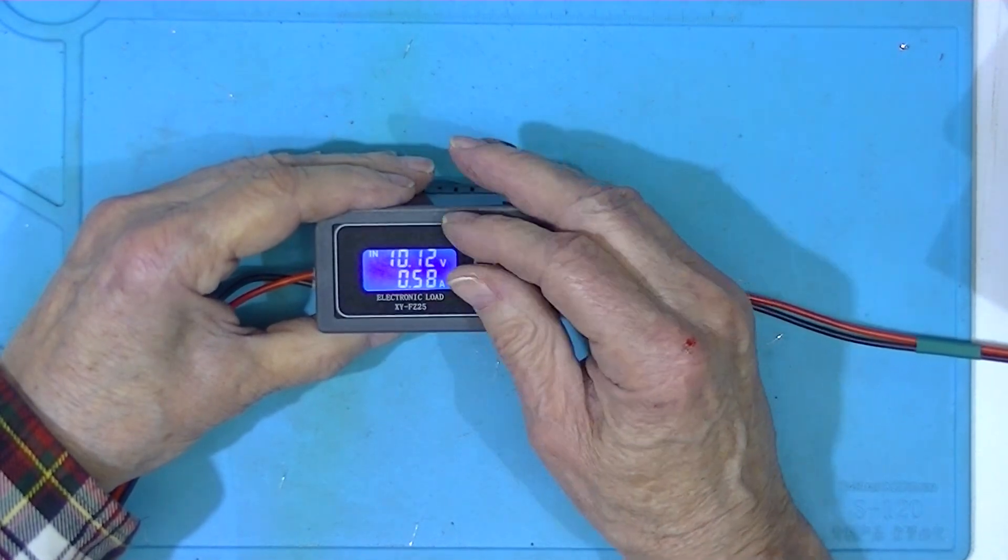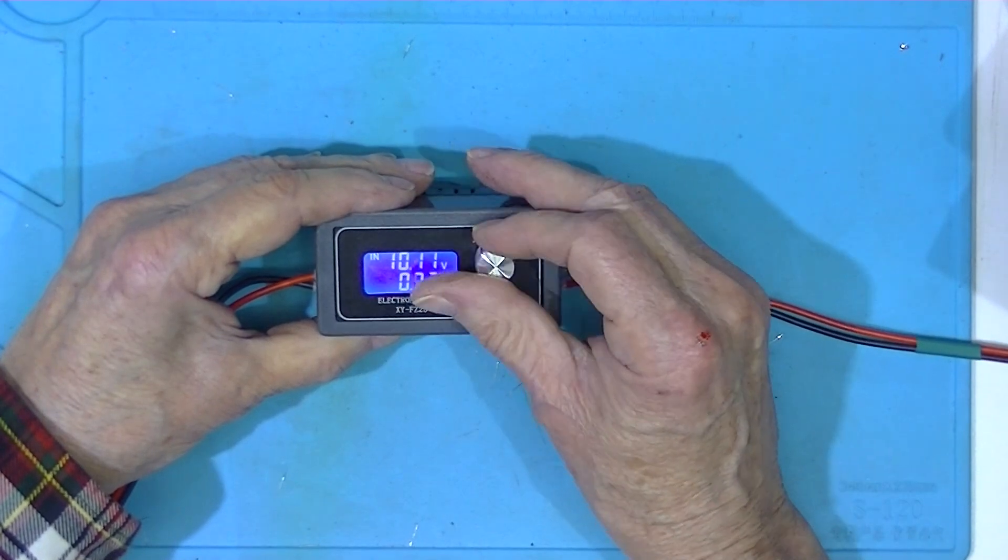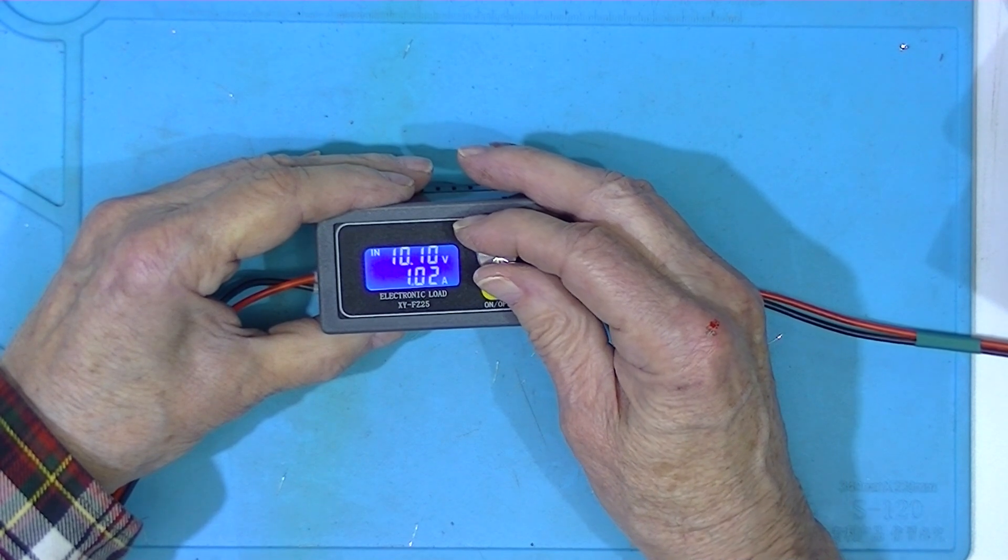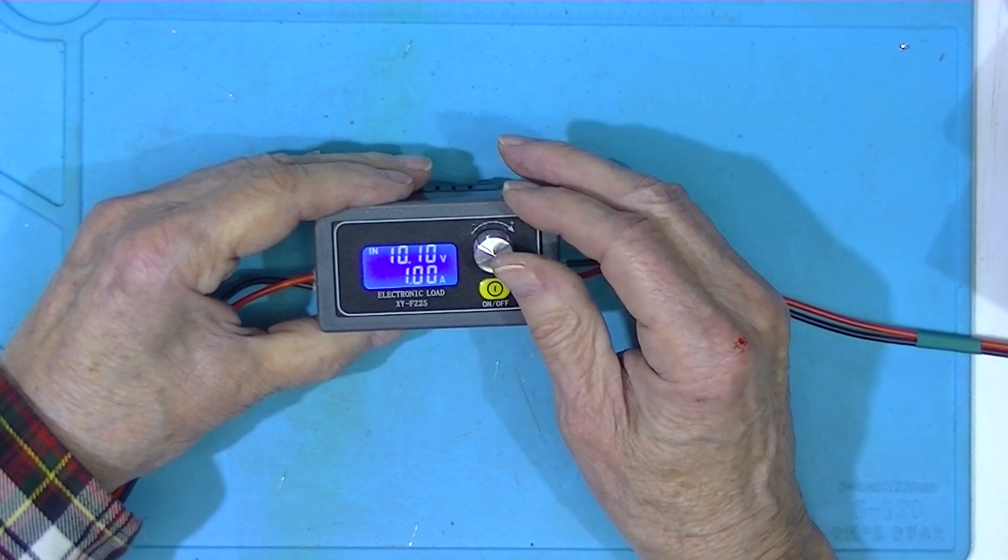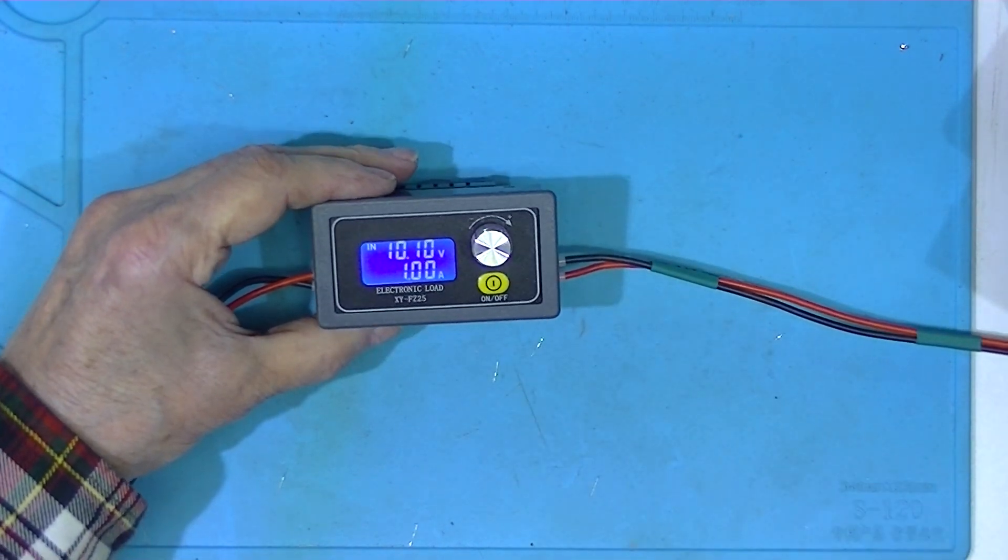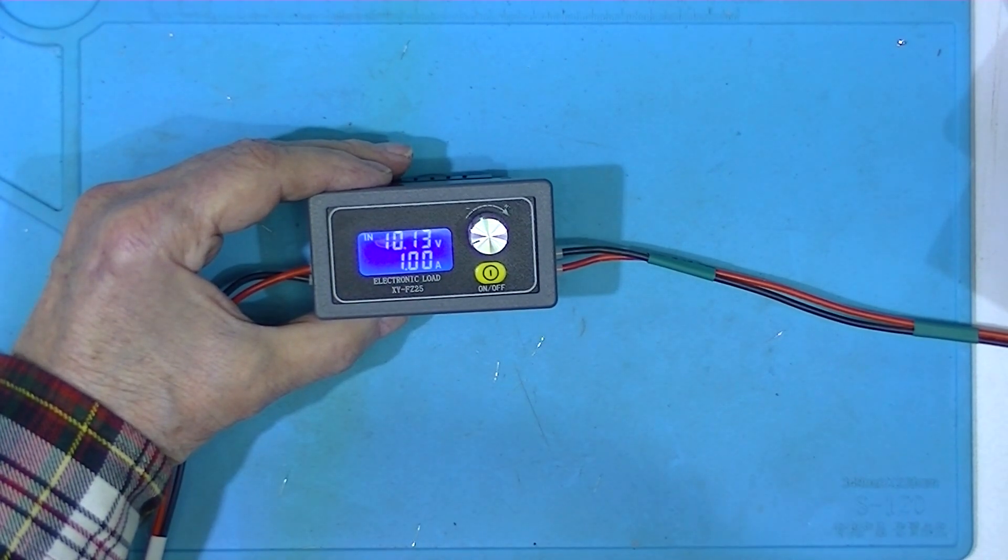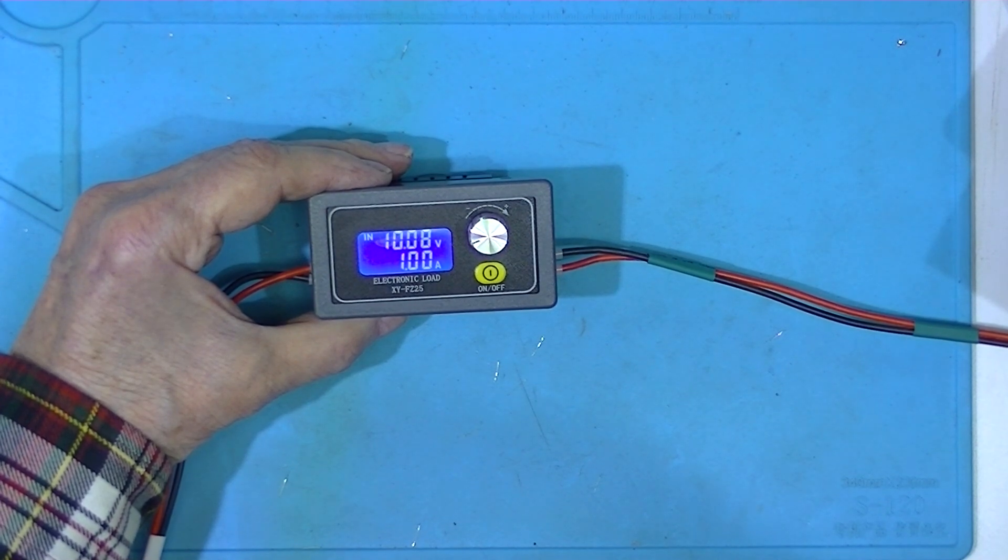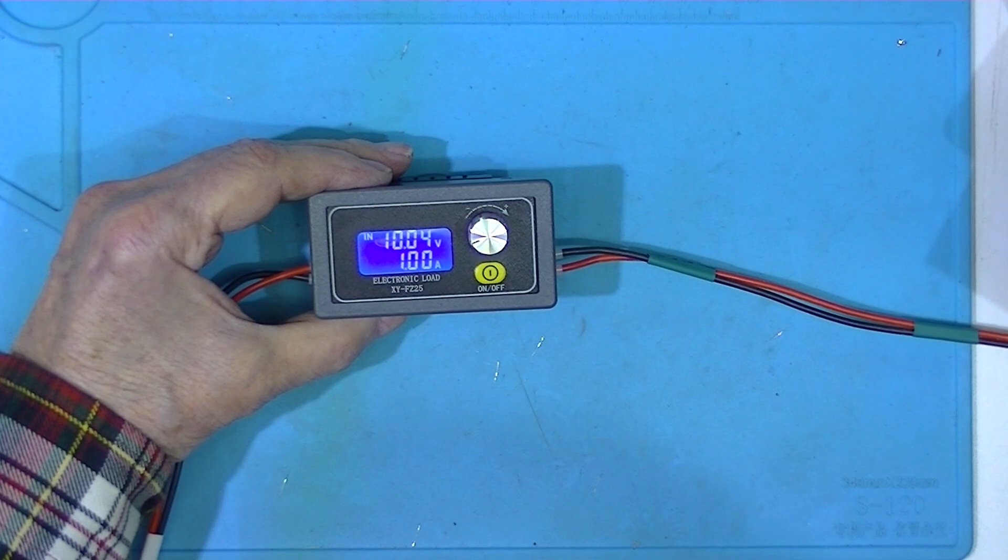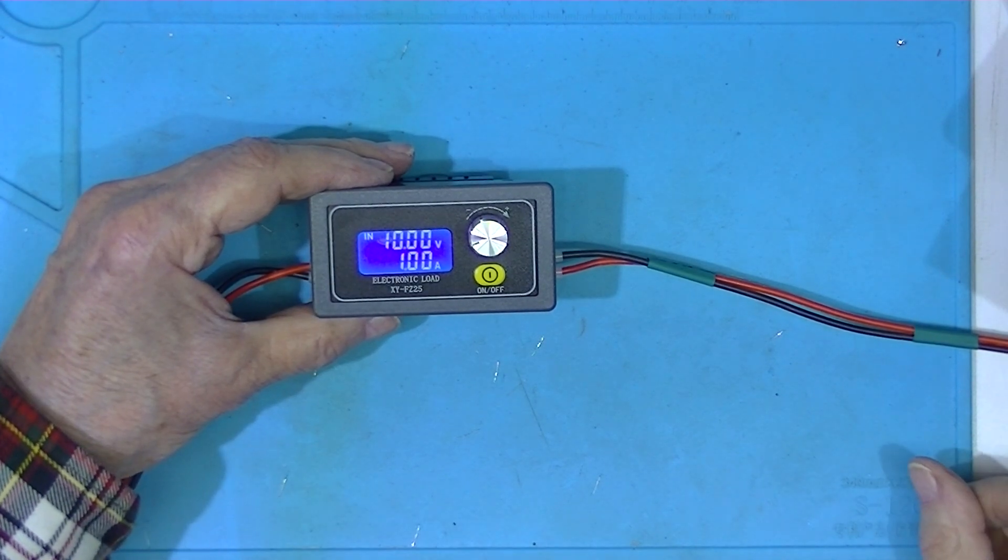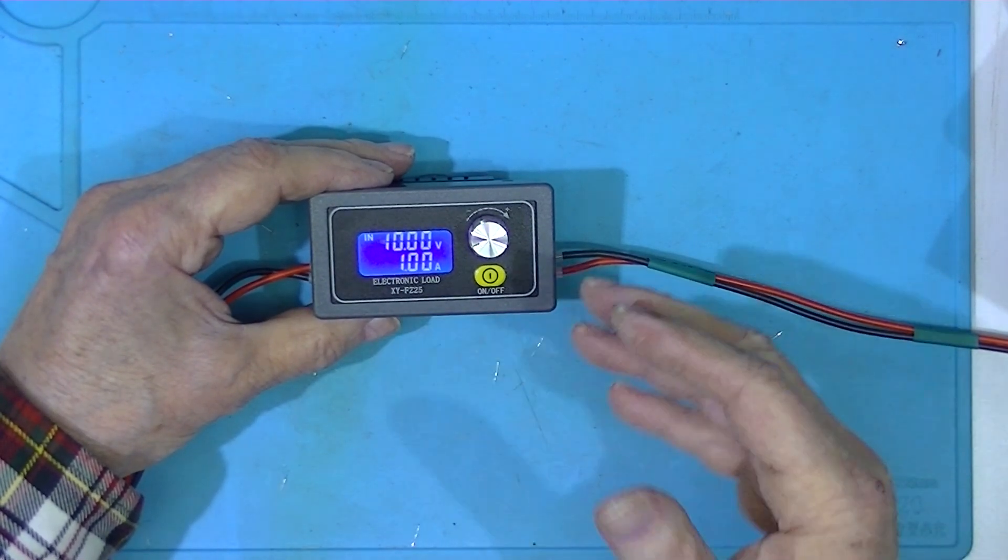Let's take it up to 10 watts, which would be one amp at 10 volts. I'll take a look at the fine adjustment on my power supply. Adjust it to 10 volts at one amp. This is 10 watts.